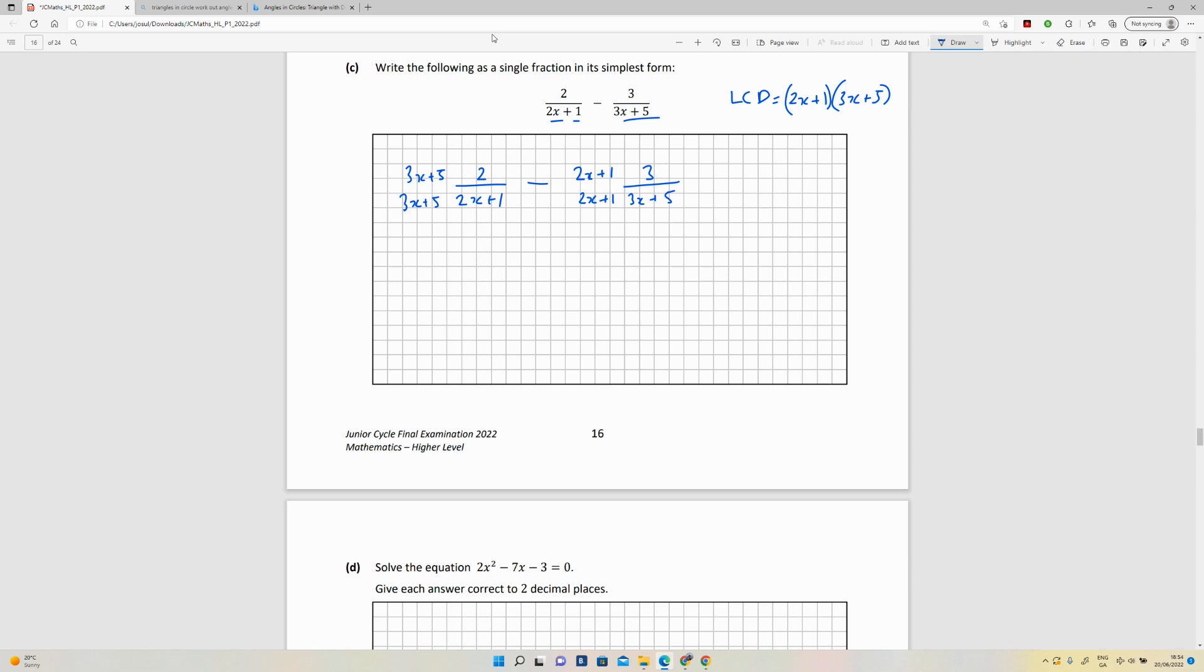So using the distributive property you're going to get 6x plus 10 all over 3x plus 5 times 2x plus 1.